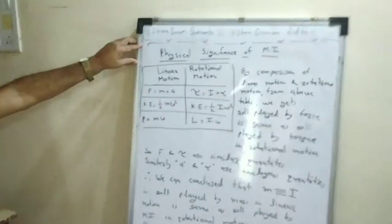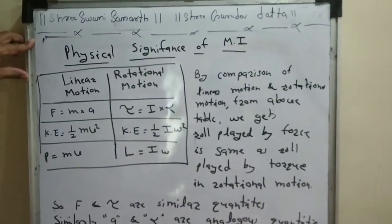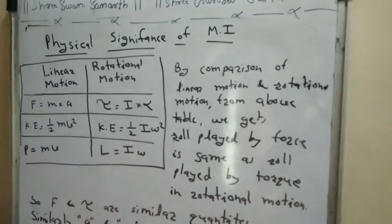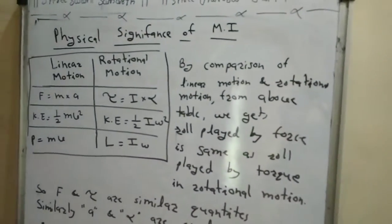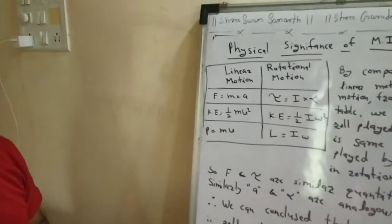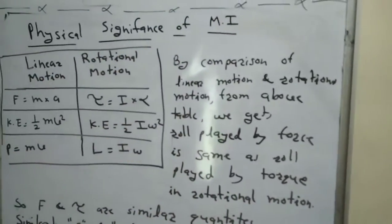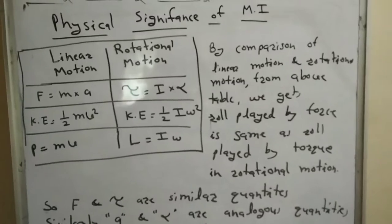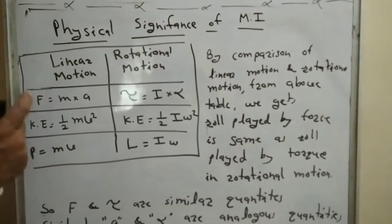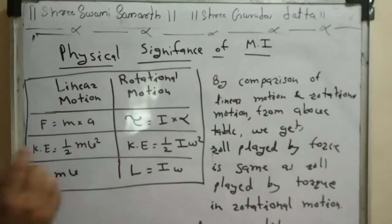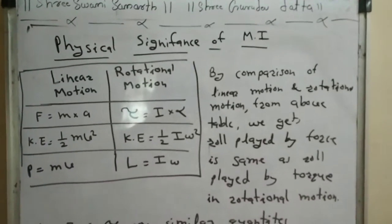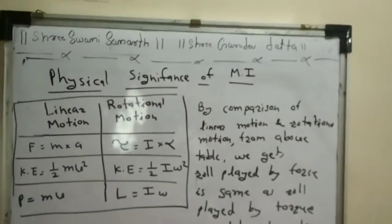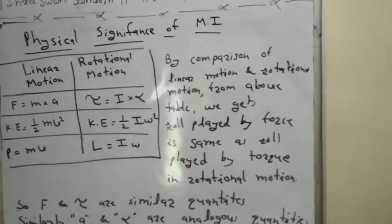Now we see the physical significance of moment of inertia. In board examinations, this is a very important part — two-mark questions are often asked on this. To understand the physical significance, we consider a comparison of formulae between two motions: linear motion and rotational motion. Whenever a body moves in a straight line, it is called linear motion. If the body rotates, it is called rotational motion.